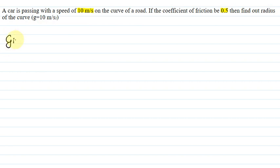So here we have data available: speed v is 10 meters per second, coefficient of friction μs is 0.5, and acceleration due to gravity g is 10 meters per second squared.